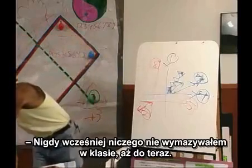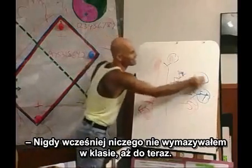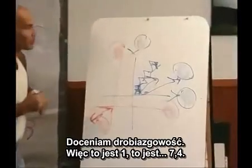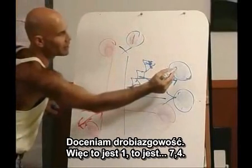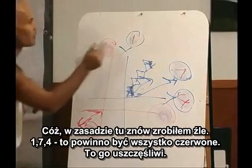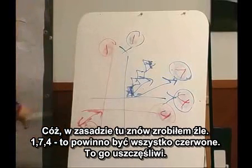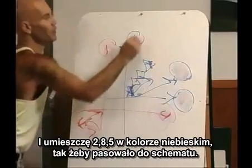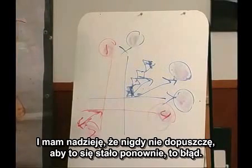I follow you now. And I've never erased in a class before, until now. But here we go. I appreciate meticulousness. So this is a one. This is a four. A four is there? Actually, I did it wrong again — one, seven, four. Because it should be all red. One, seven, four, and that should be... and I'll put two, eight, five in the blue, so it matches the chart.